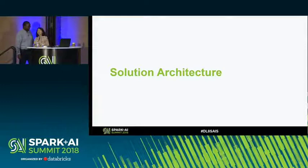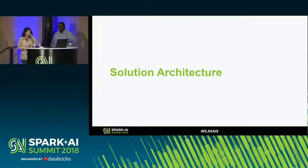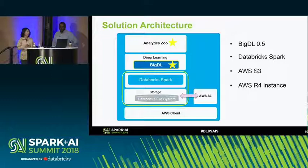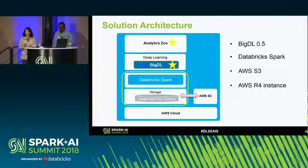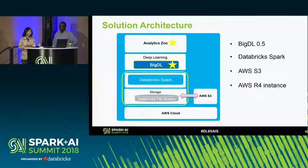Hello everybody, I'm Jenny from the Intel big data technology team. I'm very happy to work on this project with Maurice and the World Bank. I'll give an introduction to our solution architecture. The whole architecture is based on the AWS cloud, using the Databricks Spark system and Databricks file system as storage. The raw dataset is stored in AWS S3. For the deep learning part we use BigDL as the infrastructure, and to create the applications we use Analytics Zoo, an open source project built on BigDL and Apache Spark.